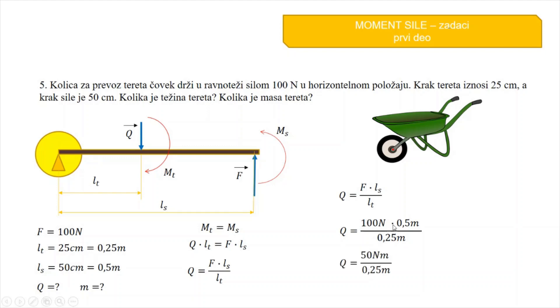100 puta 0.5 je 50 i prepišemo Nm. Dole ćemo prepisati samo 0.25 m. 50 podeljeno sa 0.25 je 200 m i metar se skrati, ostaje samo N. Dobili smo težinu tereta.